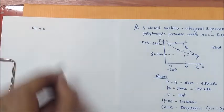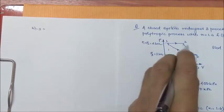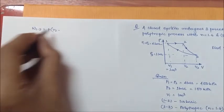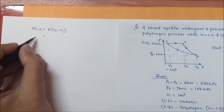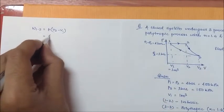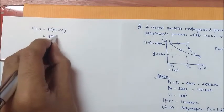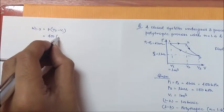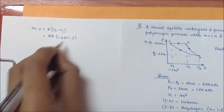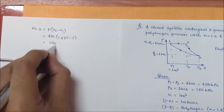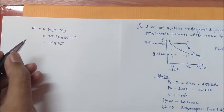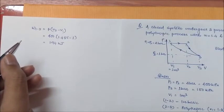So, first individual work done for each process. Work done for process 1 to 2 is the isobaric process. The work done will be P into V2 minus V1. Now, see the P is constant. So, P is 400 kilopascal into V2, which we calculated as 1.485 minus 1. The value comes 194 kJ.